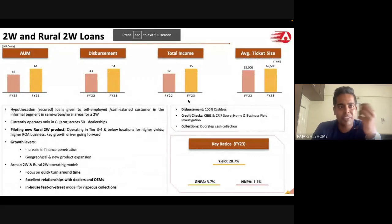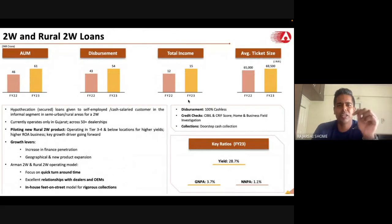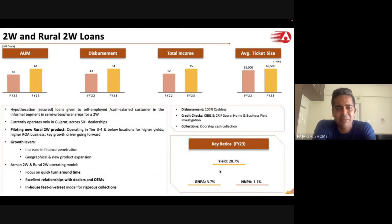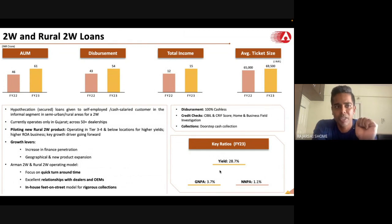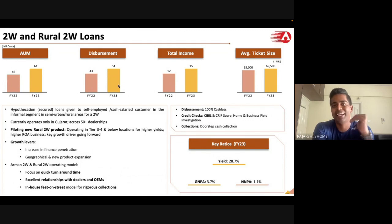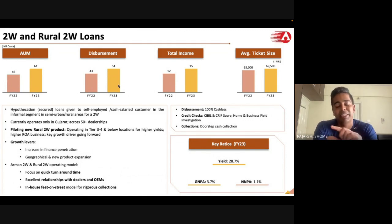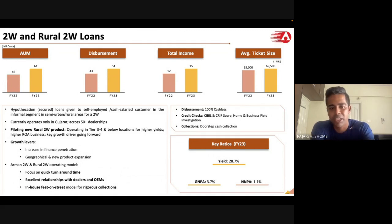The two-wheeler and rural two-wheeler loan book has a pretty high yield, but it's a very small part of the book. The AUM and disbursal haven't grown at a high rate because India's two-wheeler segment has been struggling for the last four to five years, and Arman has also acknowledged this on the call.